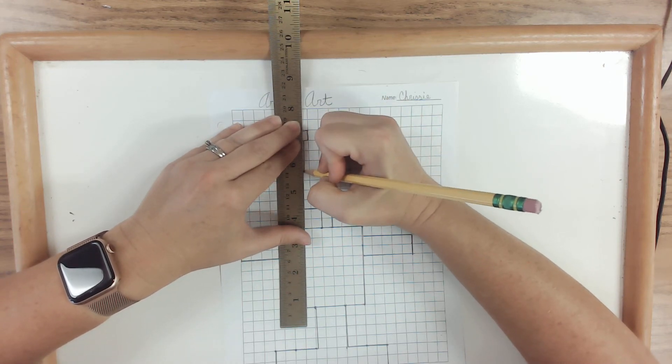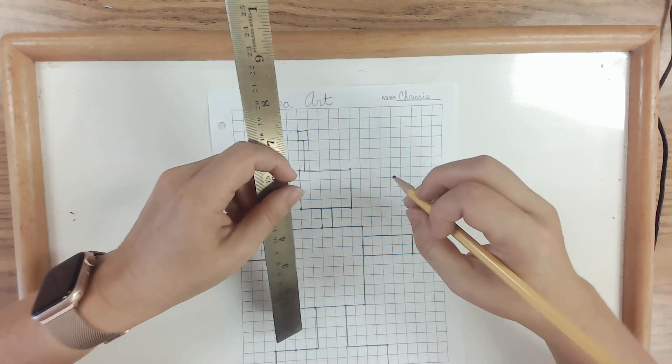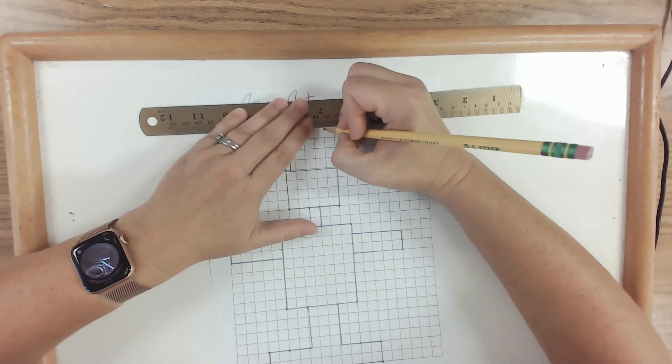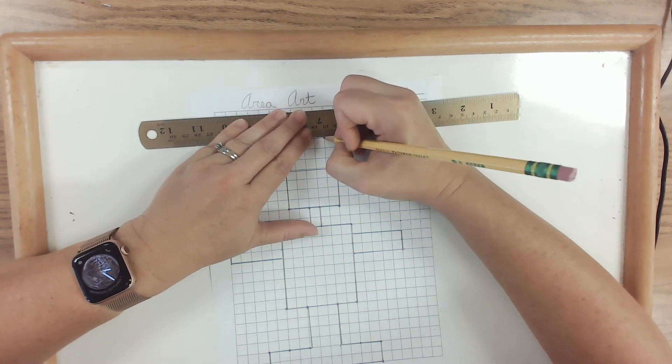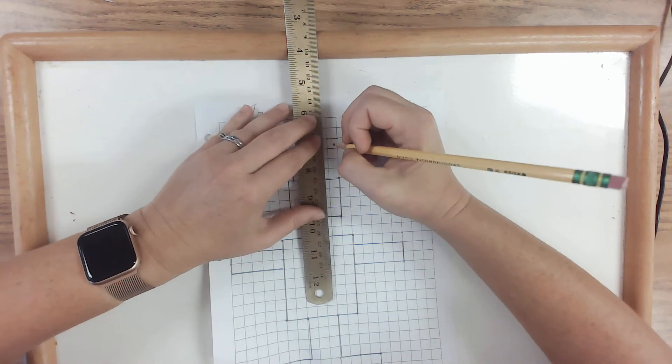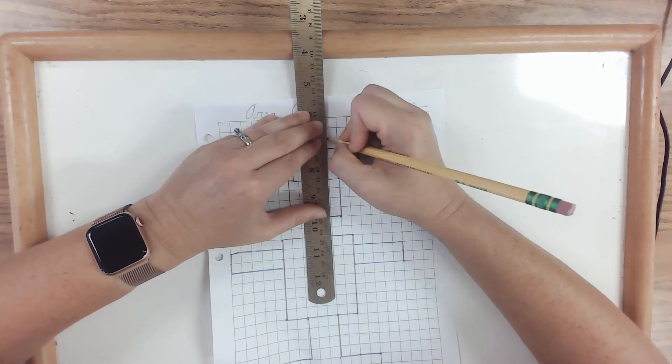Now, you'll notice that later, I can add in other parts of this that are not for area. That's perfectly fine. But you want to draw in the areas that are geometric first. And measure those. And then you can add in some other features.